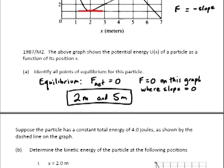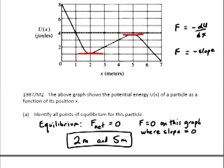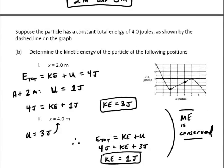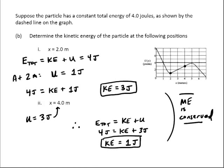Part B says suppose the particle has a constant total energy of 4 joules as shown by the dashed line in the graph. We want to determine the kinetic energy of the particle at the following positions.